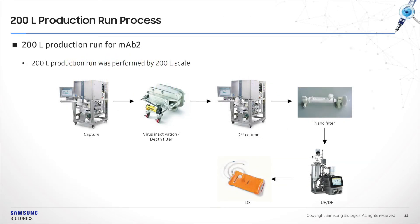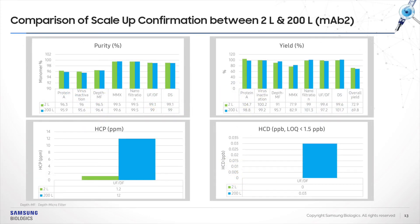The purpose of the 200-liter production round for mAb2 was to test the scalability of the two-step purification process. Results demonstrated compatibility between 2-liter and 200-liter runs in terms of purity, yield, HCP, and HCD. Therefore, based on these results, the scalability of the mAb2 two-step purification platform to the 200-liter production run from the 2-liter verification round was confirmed.